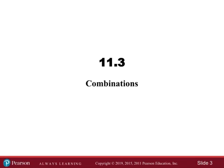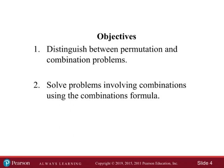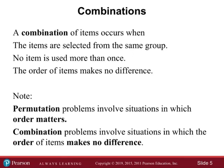With combinations, it's the same formula as permutation, but in order to remove the repeats we divide by r factorial. Objectives: one, distinguish between permutations and combination problems; two, solve problems involving combinations using the combination formula. A combination occurs when items are selected from the same group, no item is used more than once, and the order of the items makes no difference.